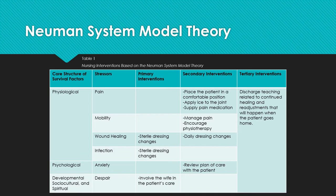Interventions can occur at the primary level to prevent a stressor from disrupting the normal line of defense, the secondary level to strengthen the internal lines of resistance when stress has broken through the normal line of defense, and at the tertiary level, which focuses on interventions that allow for readjusting to a stable state of well-being. Table 1 on this slide depicts the nursing interventions that would be performed based on the nursing assessment from this scenario.